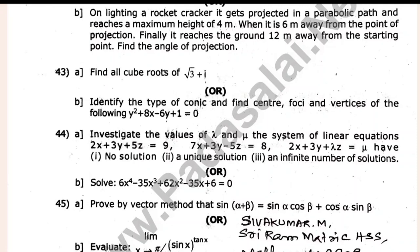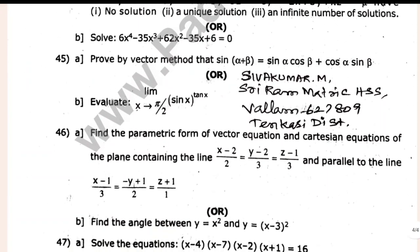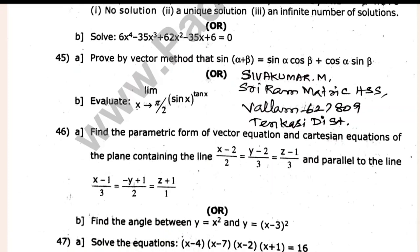Find all cube roots: root of 3 plus i. Identify the type of conic and find the center, foci, and vertices of the following: y² plus yx minus 6y plus 1 is equal to 0. Questions 43, 44, 45, 46 — investigate.